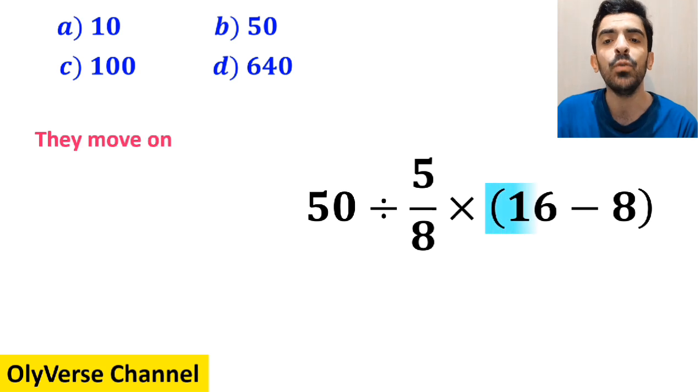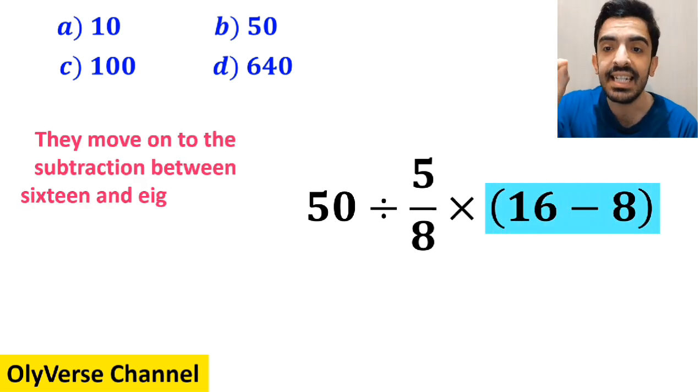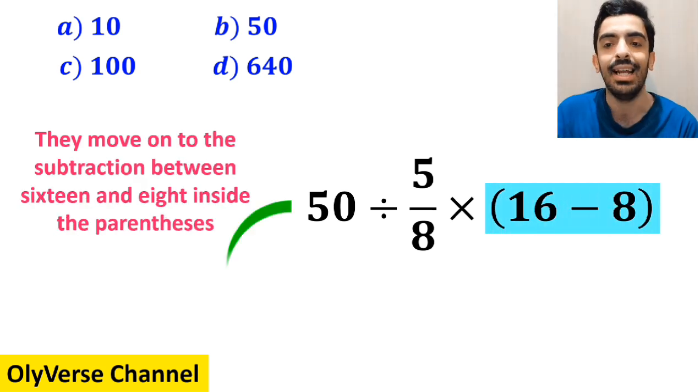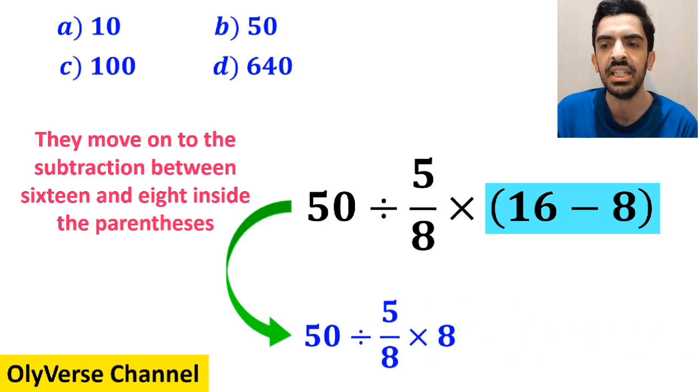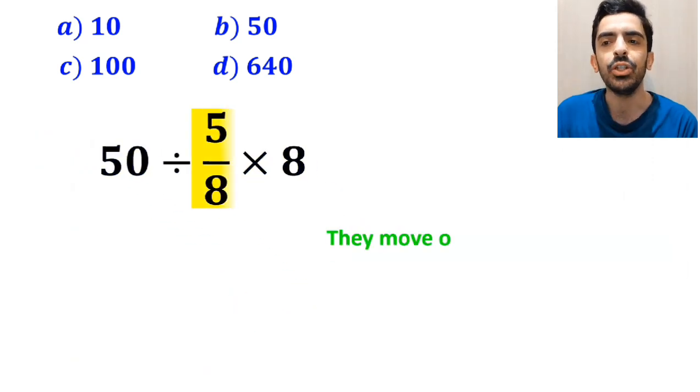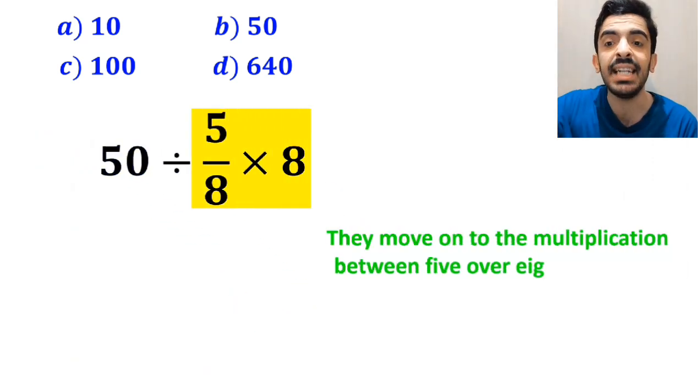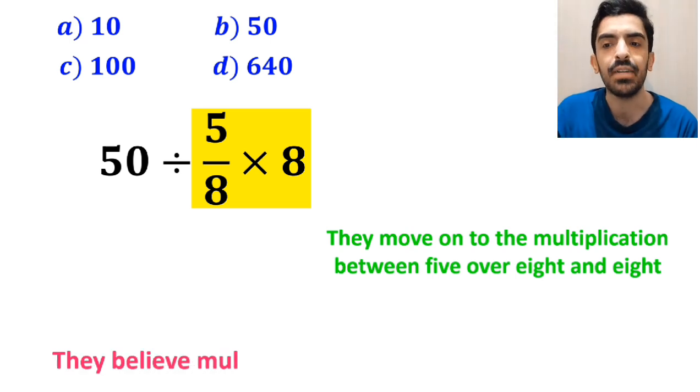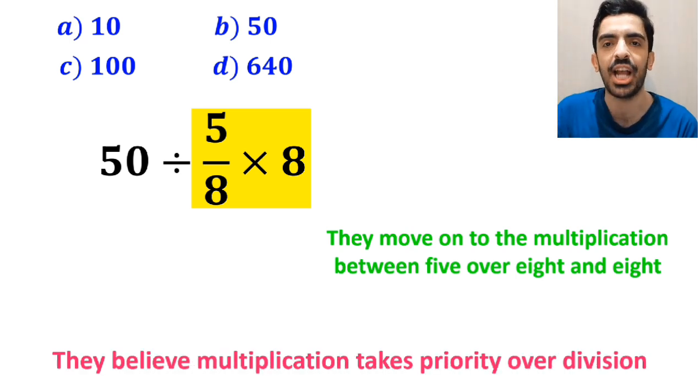In the next step, they move on to the subtraction between 16 and 8 inside the parenthesis and simplify this expression to 50 divided by 5 over 8 times 8. Then they move on to the multiplication between 5 over 8 and 8 because they believe multiplication takes priority over division.